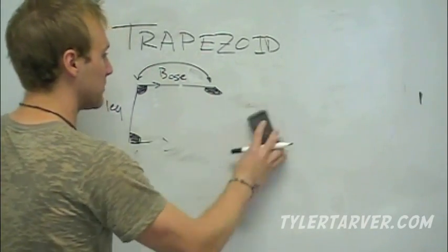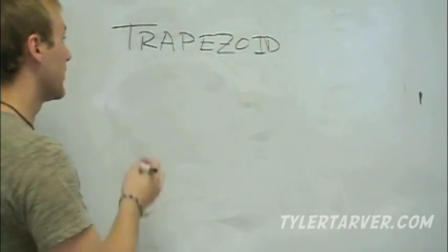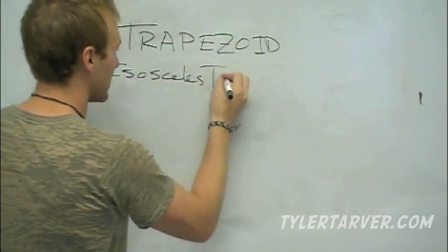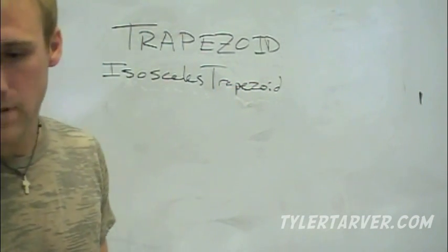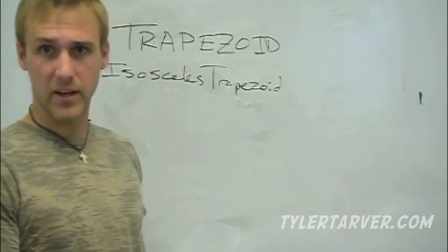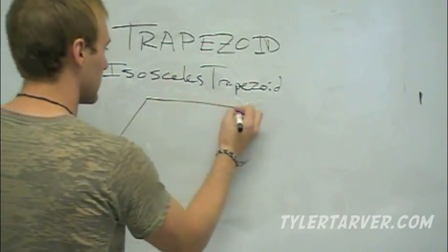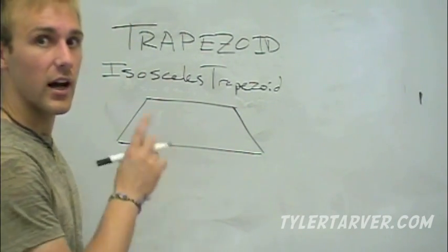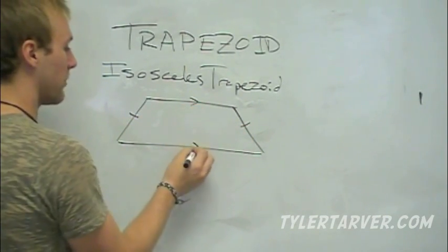Now I'm going to teach you about a special type of trapezoid: the isosceles trapezoid. Just like an isosceles triangle has two congruent sides, an isosceles trapezoid has two congruent sides — the legs are congruent. The two bases are still parallel, which makes it a trapezoid.